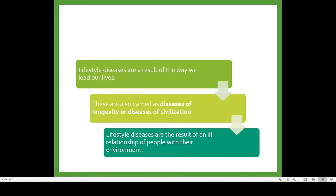That is the reason why these kinds of diseases gradually develop in human beings after a certain age — especially when we get older, these types of diseases will gradually come. These diseases are also known as diseases of longevity or diseases of civilization. As I told you, these diseases will gradually appear only after around the age of 40.